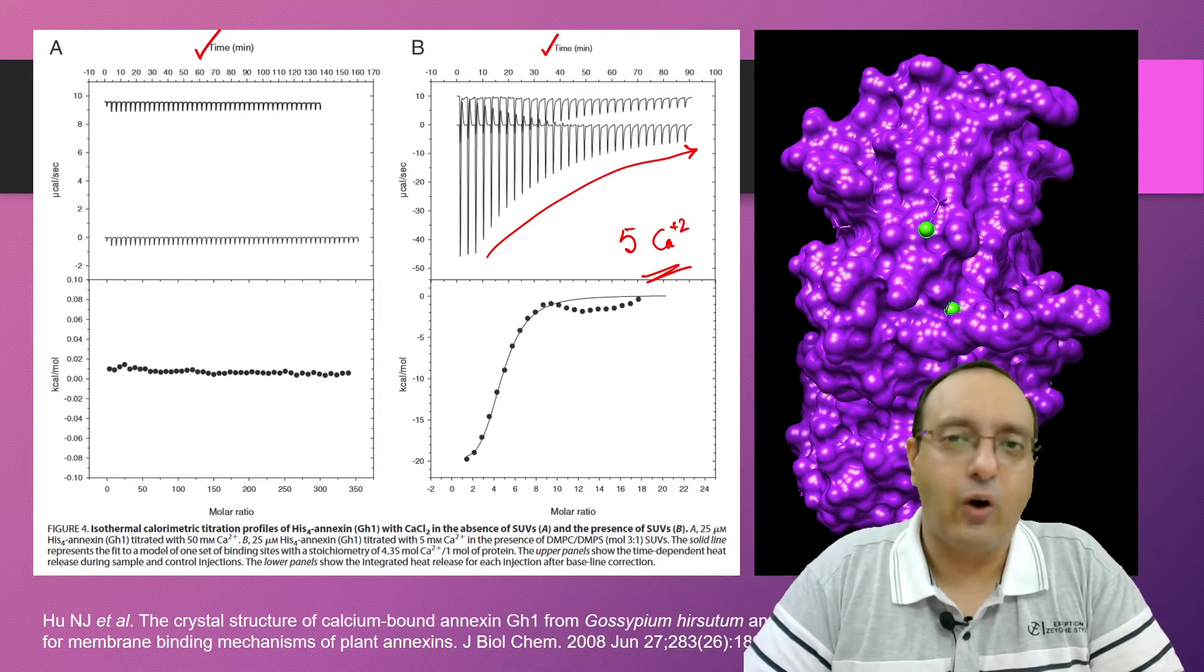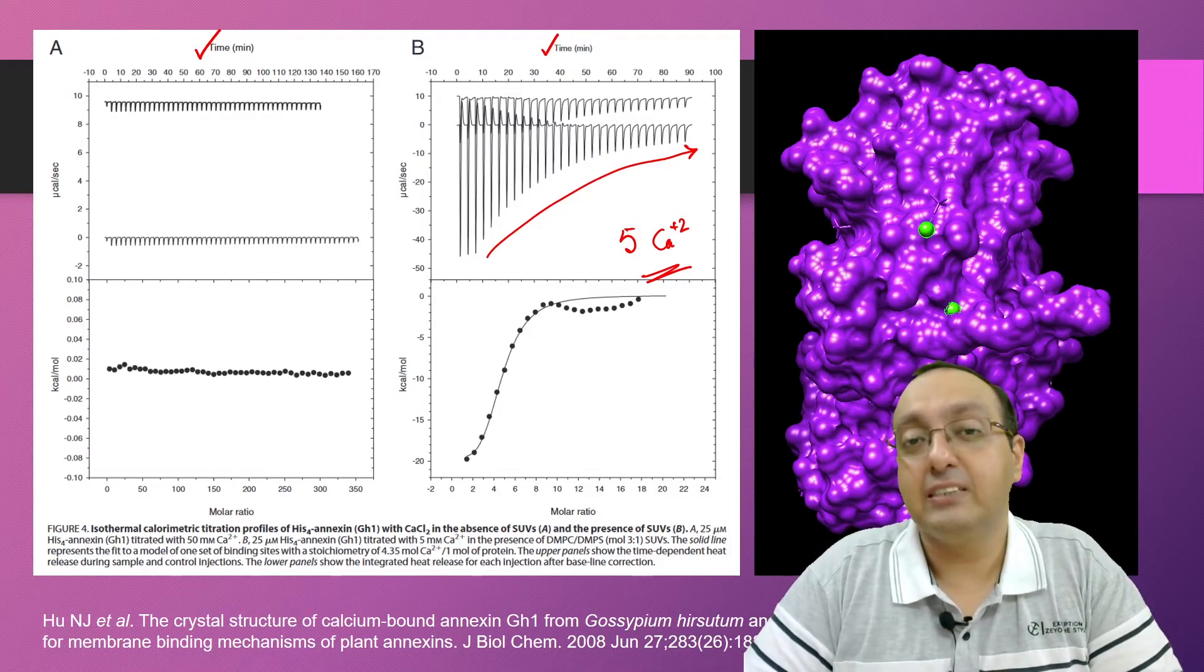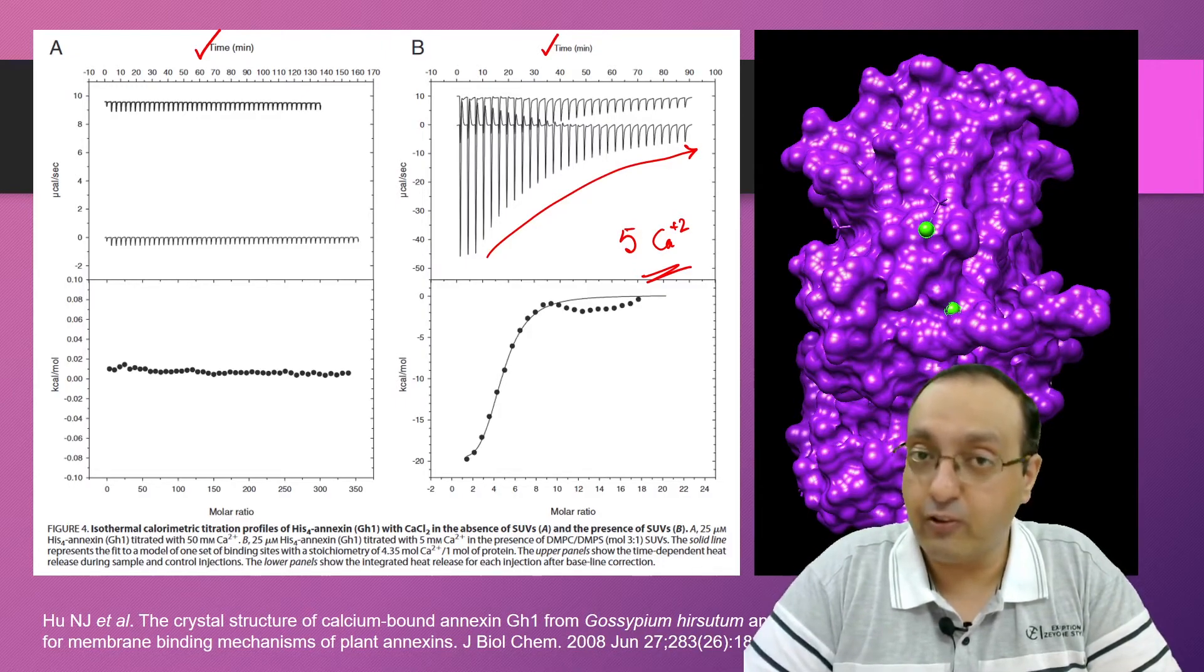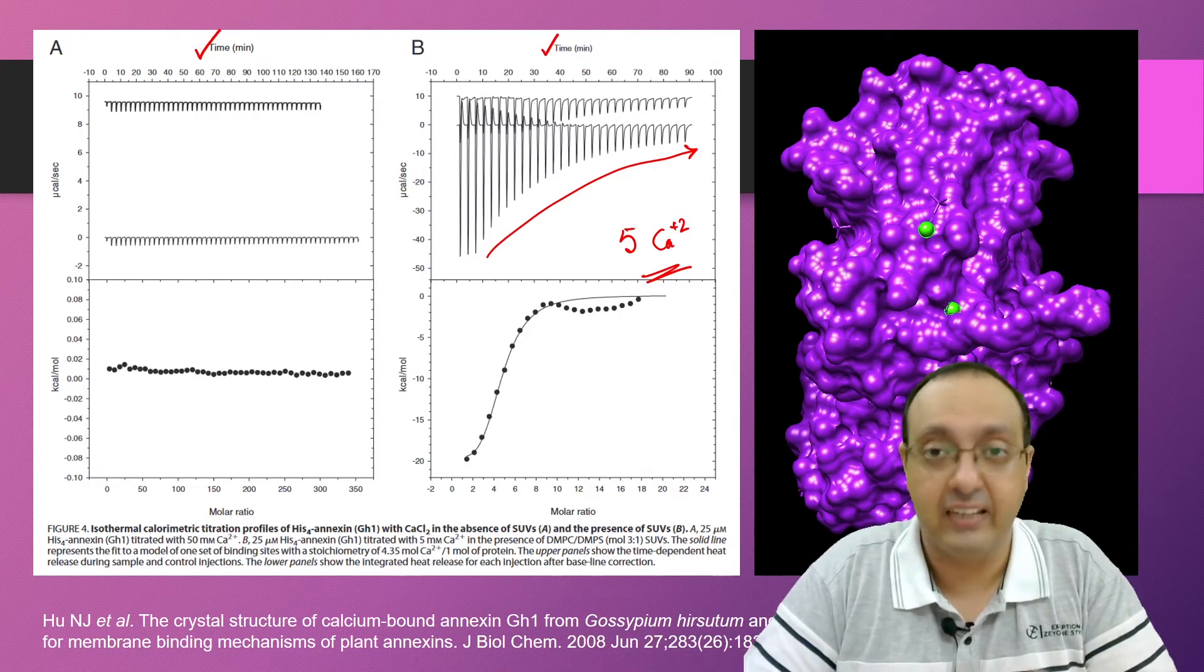So far so good. ITC is pretty good at estimating the dissociation constant. It is very good at estimating the stoichiometry, and it is pretty good at detecting the enthalpy change of protein-ligand interaction.